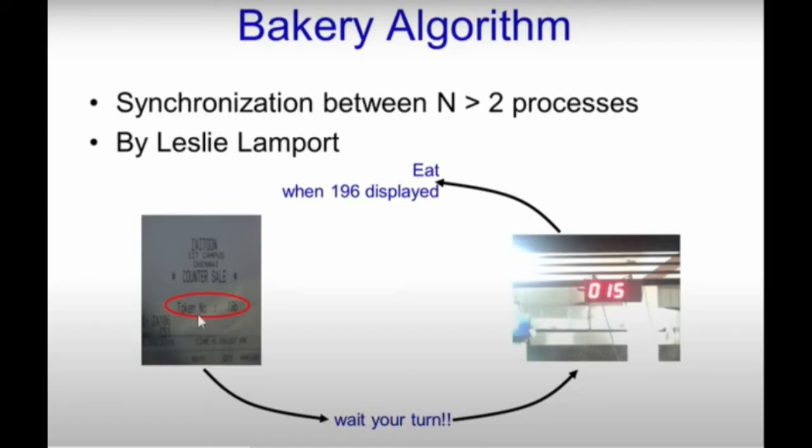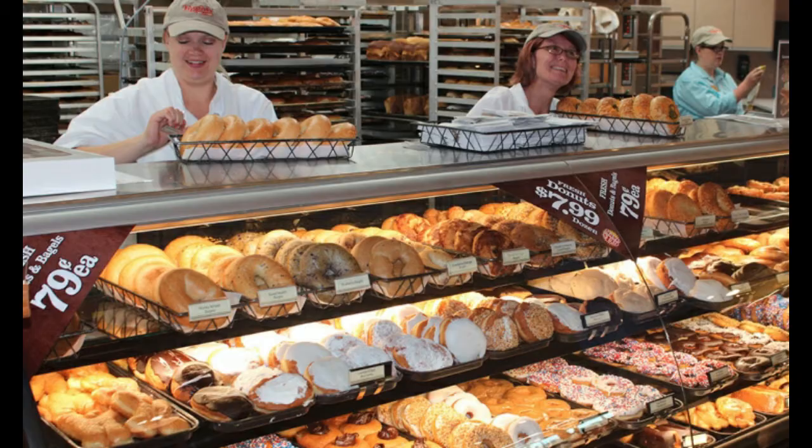Now we'll see how the Bakery Algorithm is used to solve the critical section problem where there are N processes involved, and all these processes access the same critical section. We'll see how the algorithm relates to the bakery analogy.